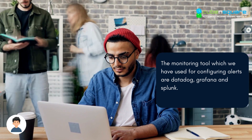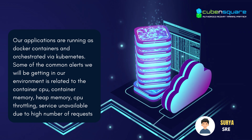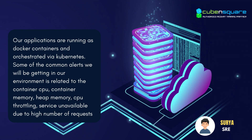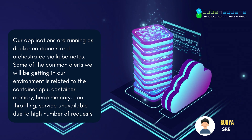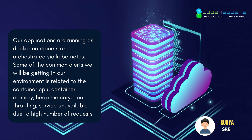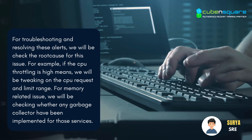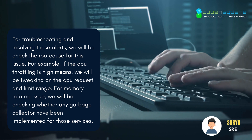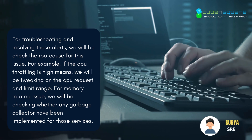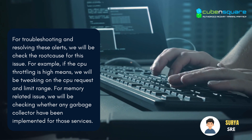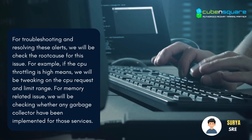Our applications are running as Docker containers and orchestrated via Kubernetes. Some of the common alerts we get in our environment are related to container CPU, container memory, heap memory, CPU throttling, and sometimes servers become unavailable due to a high number of requests. For troubleshooting and resolving these alerts, we check the root cause of the issue. For example, if CPU throttling is high, we tweak the CPU request and limit range. For memory-related issues, we check whether any garbage collection has been implemented for those services.